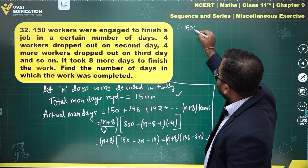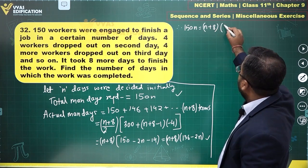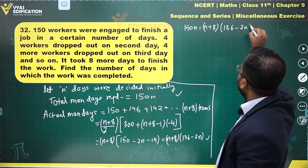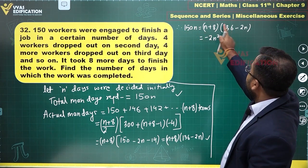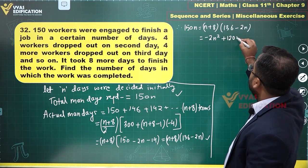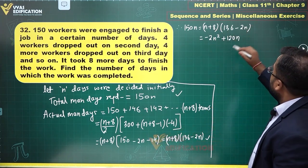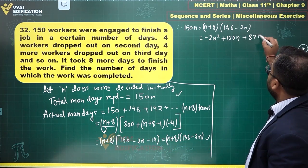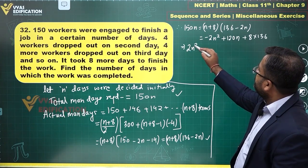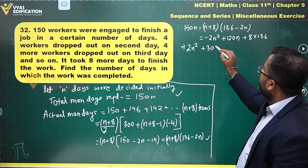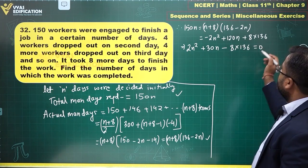Let's equate them and solve for the value of n. So therefore, 150n is equal to this product, n plus 8 times 136 minus 2n. And what does this become? This is minus 2n square, 136n minus 16n is 120n, and you have 8 into 136. Plus 8 into 136 is what you get. Let's bring everything on the left hand side. This is 2n square plus 30n minus 8 into 136 is equal to 0.